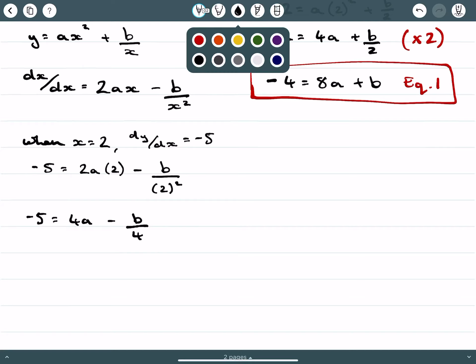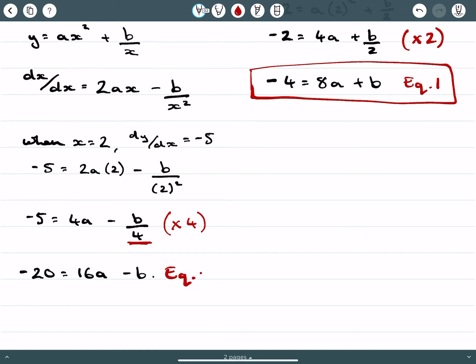Like with the other expression, I don't like this fraction, so I'm going to multiply both sides by 4. That gives me negative 20 equals 16a minus b, which is equation 2.